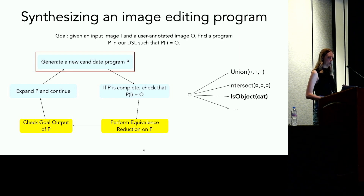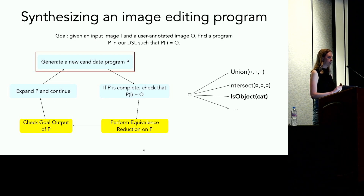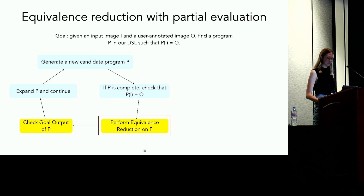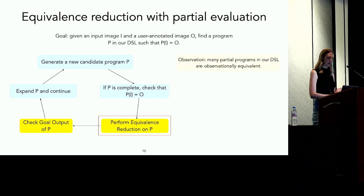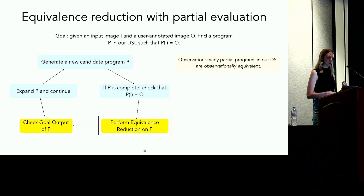To make synthesis more efficient in this domain, we use two novel pruning techniques represented by the yellow rectangles. These techniques allow us to avoid searching futile parts of the program space. The first pruning technique is equivalence reduction, based on the observation that many partial programs in our DSL are equivalent in accordance with basic properties of sets. Given a candidate program P, we can check whether P is equivalent to another program that we've already enumerated, and if it is, we can safely prune P. For instance, these two programs are equivalent since union is a commutative operation.